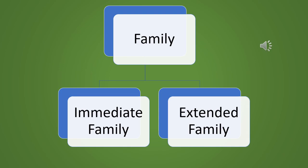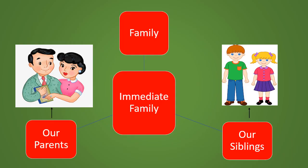Here in this chapter, we will learn about the new terms which are included in the family. First is immediate family. Immediate family includes people with whom we live. So immediate family includes our parents — means father and mother — and our siblings. Siblings are our brothers and sisters. So family members who stay with us are our immediate family.